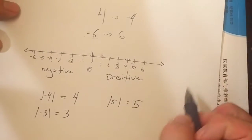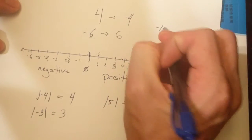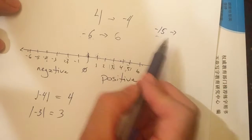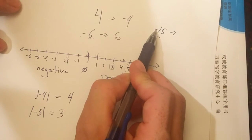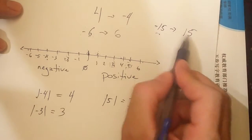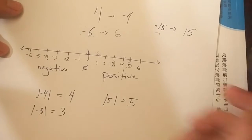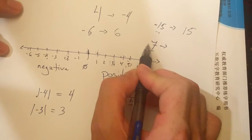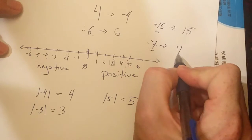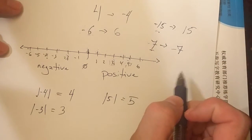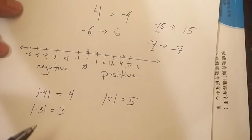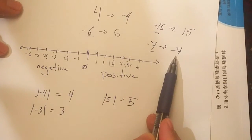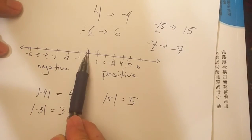And this will work for any number. For instance, negative fifteen — what's the opposite? Well, I need a distance of fifteen in the opposite direction. This is fifteen spaces from zero to the left, so the opposite is fifteen spaces from zero to the right: positive fifteen. One more — how about seven? The opposite of seven: it has a distance of seven and since it's positive, it's seven to the right. So the opposite is negative seven. I hope that helps with integers, positive and negative numbers, absolute values — the distance from zero — and of course the opposites, which have the same absolute values but in opposite directions.